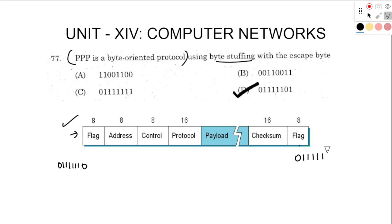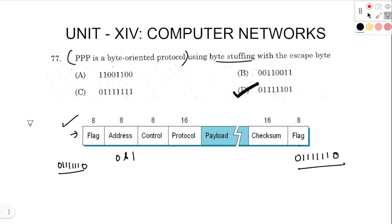Within the frame you can see the address, control, protocol, and data units. All these data units are in a sequence of 0s and 1s. Now there will be byte stuffing. There will be two types of frames: a variable length frame and a fixed length frame.